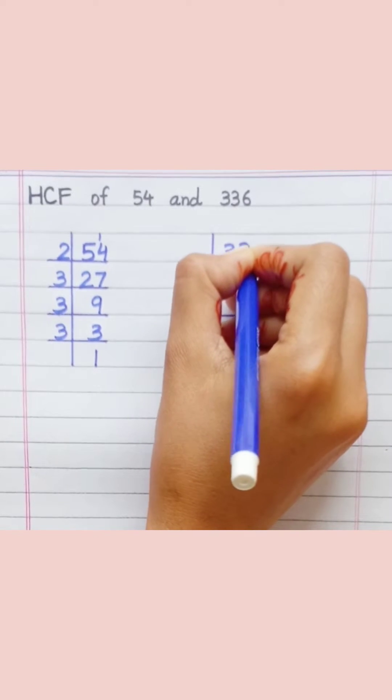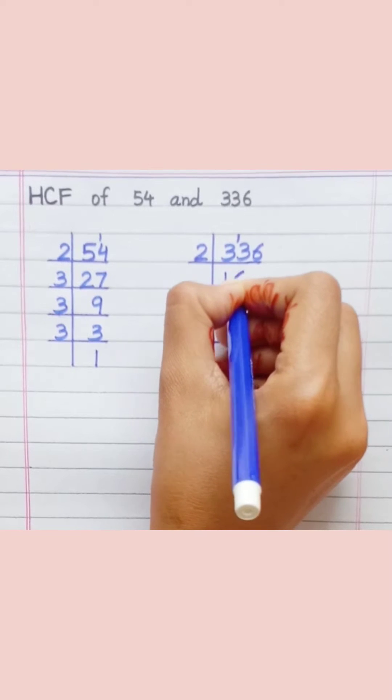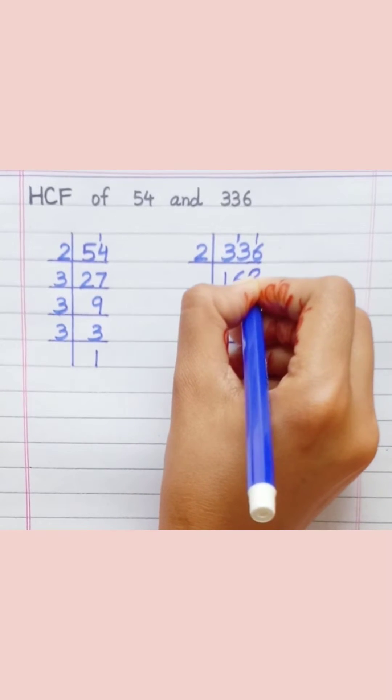336. 2 times 1 is 2. 2 times 6 is 12. 2 times 8 is 16.